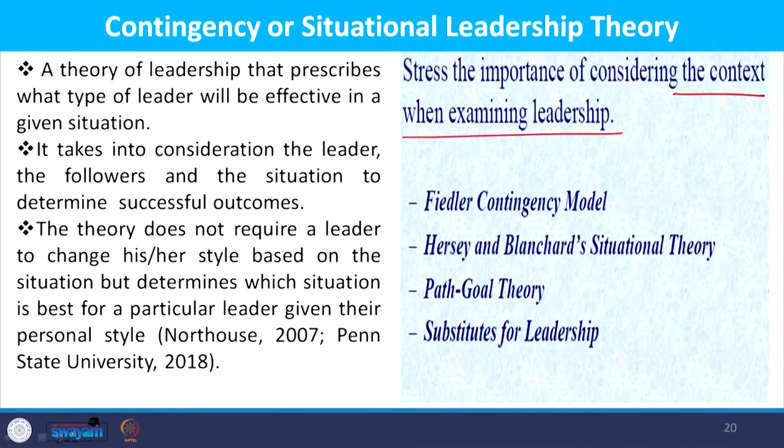The contingency theory, or situational leadership theory, is a theory of leadership that prescribes which type of leader will be effective in a given situation. It takes into consideration the leader, follower, and the situation to determine the successful outcome or effectiveness of a leader. The theory does not require a leader to change his or her style based on the situation, but determines which situation is best for a particular leader given their personal style — which is the most favorable condition for a leader.